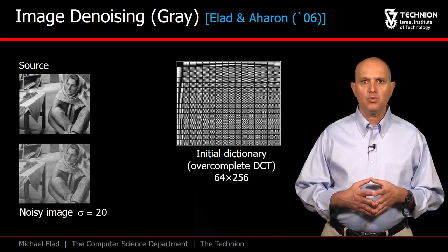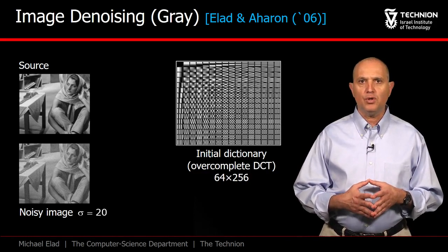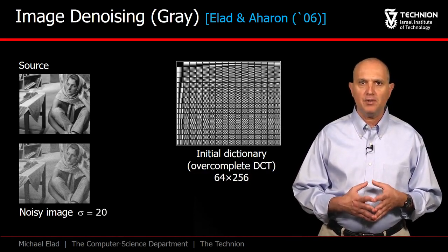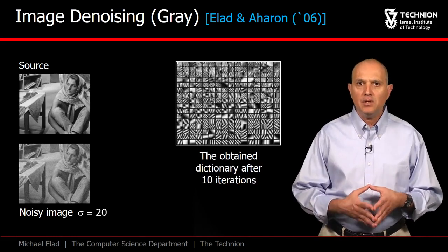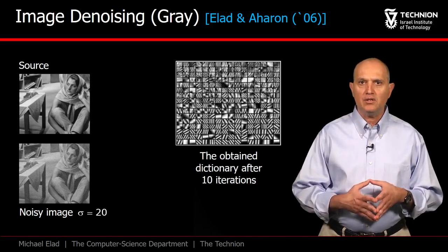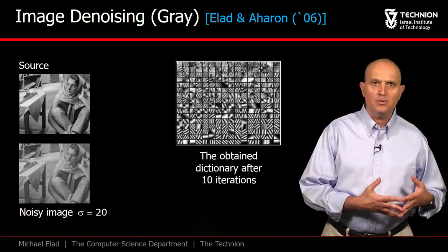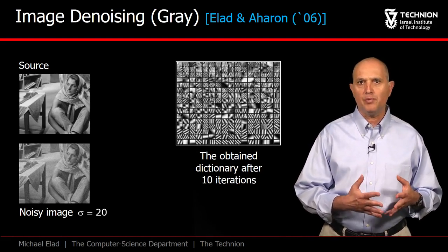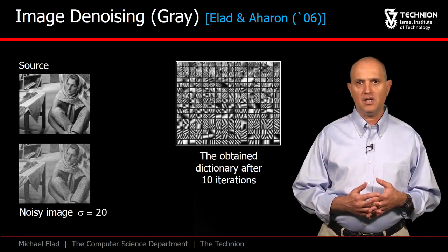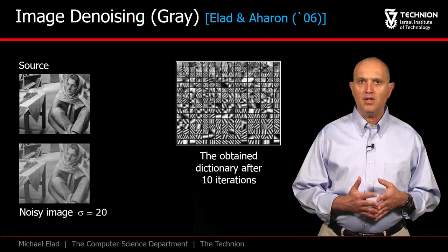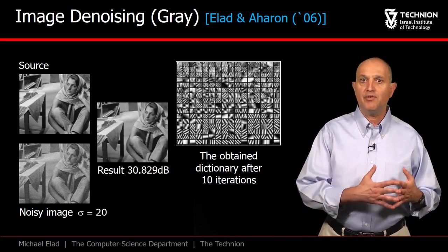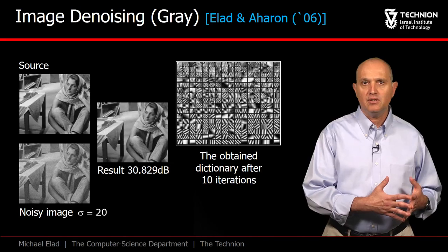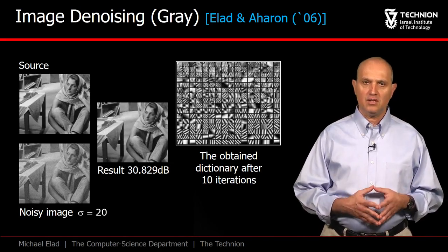A central idea in this work was to learn the dictionary from the corrupted patches directly, starting with the well-known DCT and iterating in order to get a dictionary that is tailored to the content of the image we operate on. As you can see, the resulting dictionary contains atoms that capture the unique textures that appear in our image. This algorithm and later variations of it led to state-of-the-art results.